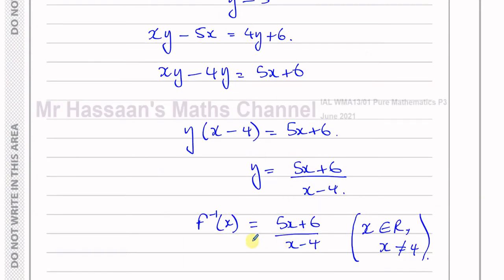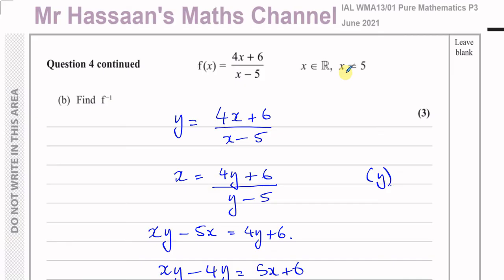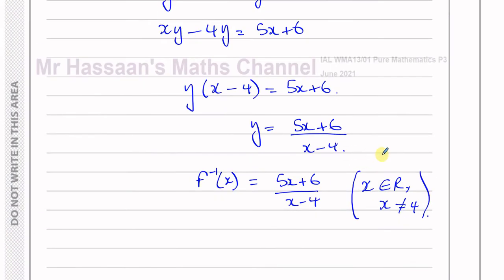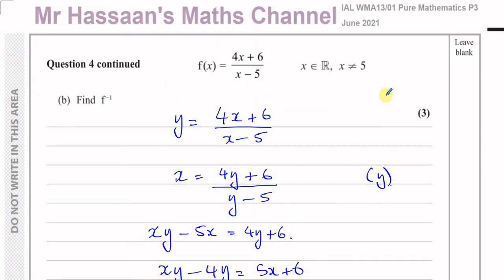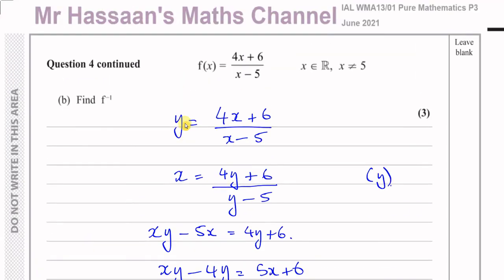When writing your answer, you should define the domain. If the original function had further restrictions, those would carry through to the inverse, and sketching would help understand this. In this particular question, f is only restricted at its asymptote, so the inverse is also restricted only at x = 4, with all other real numbers valid.